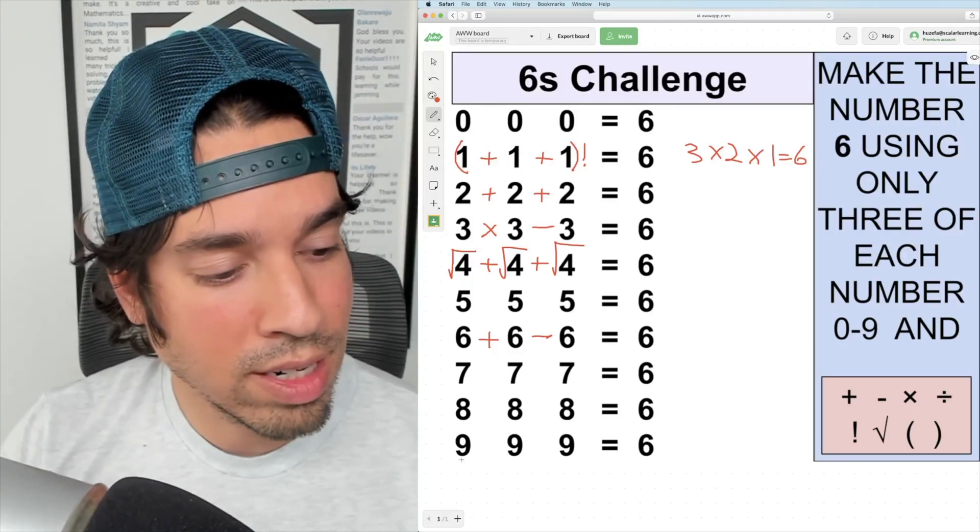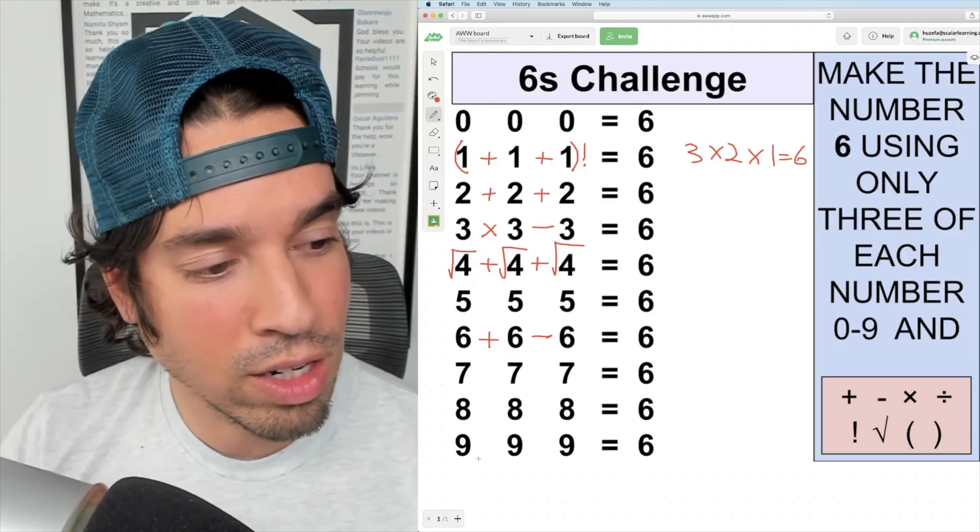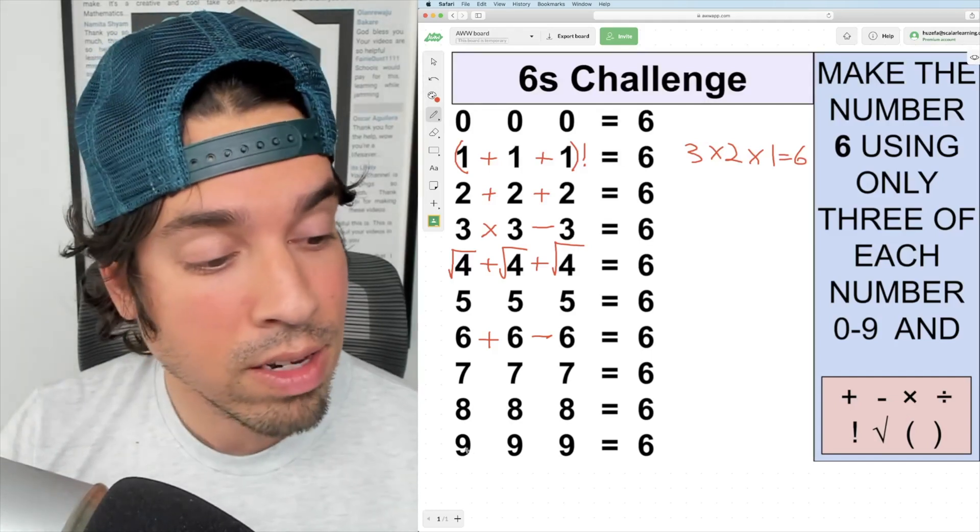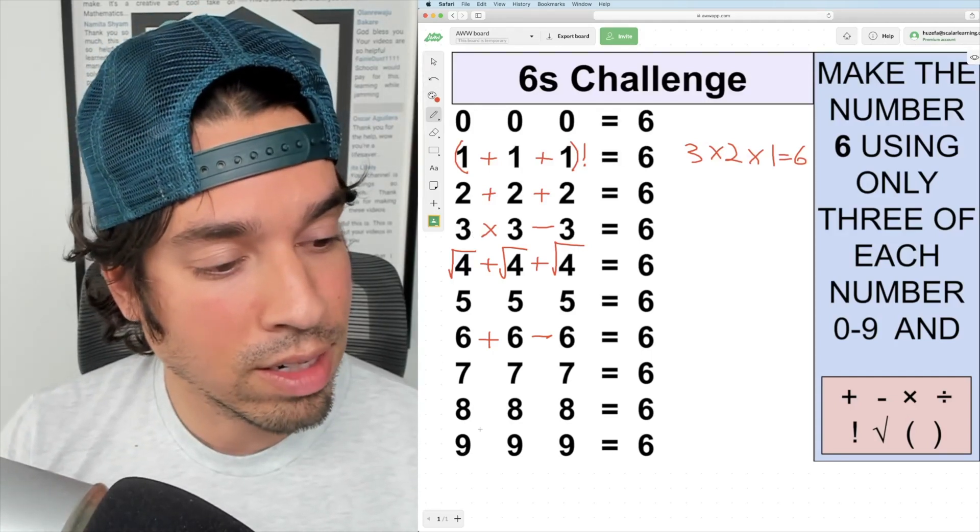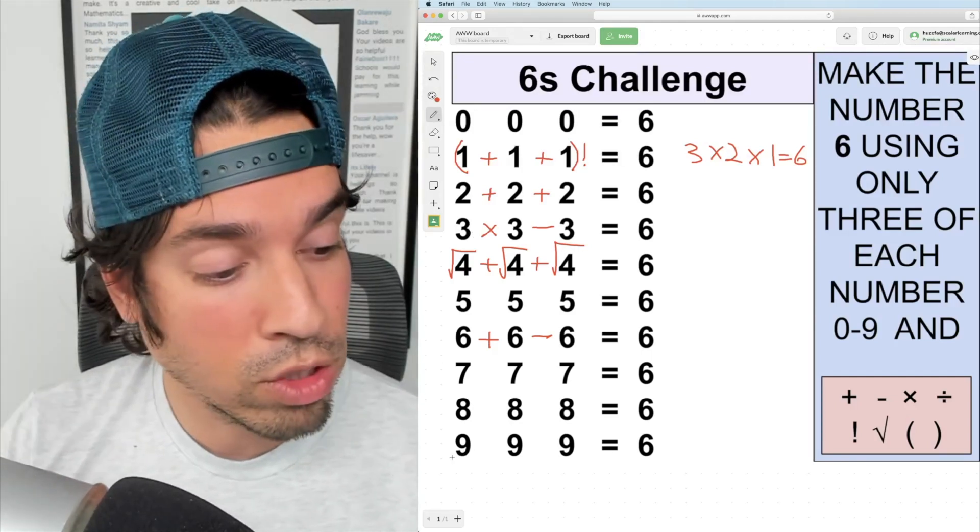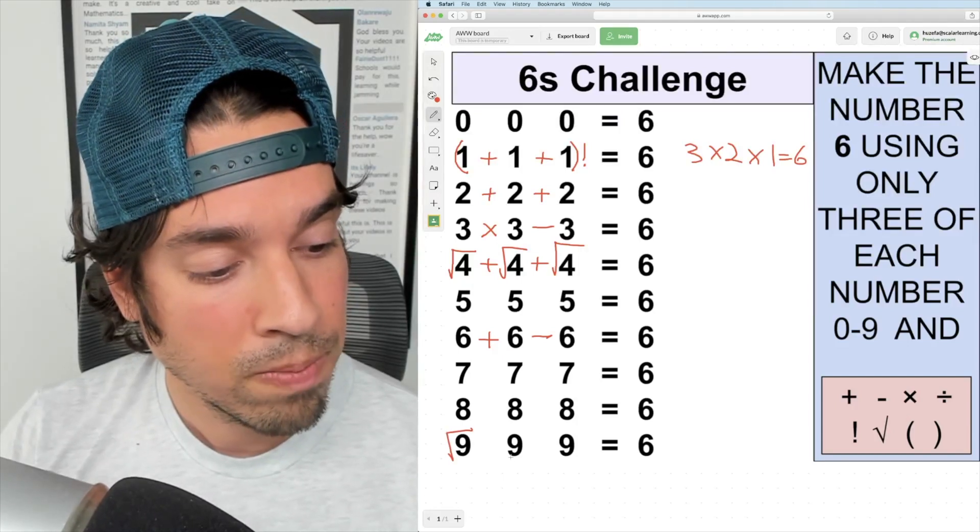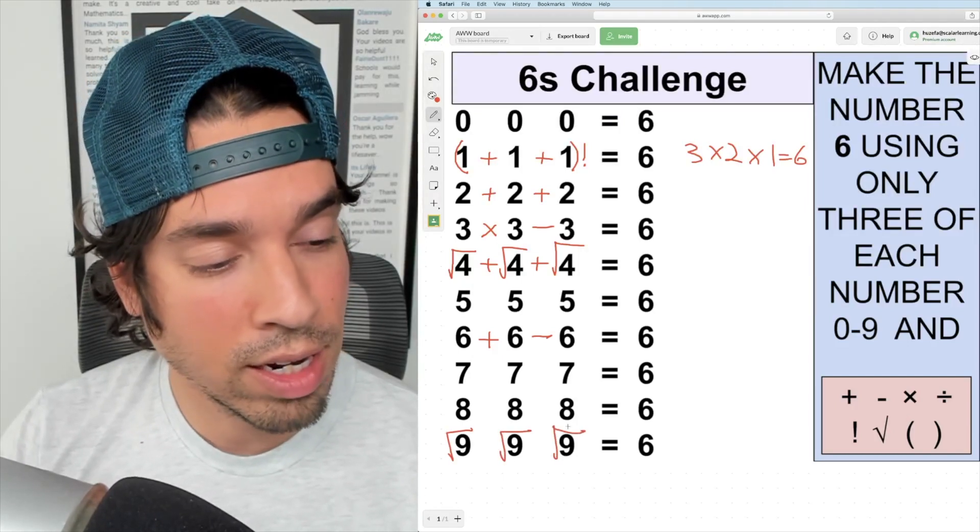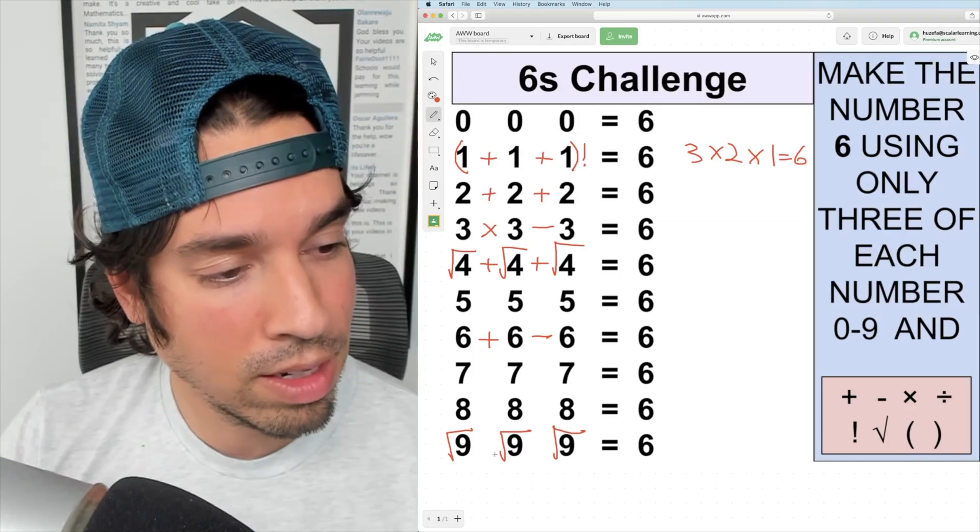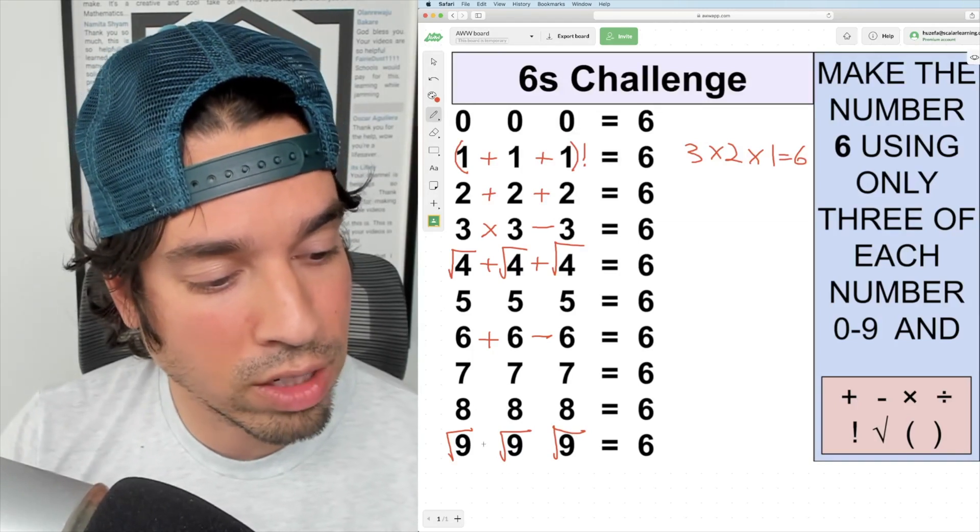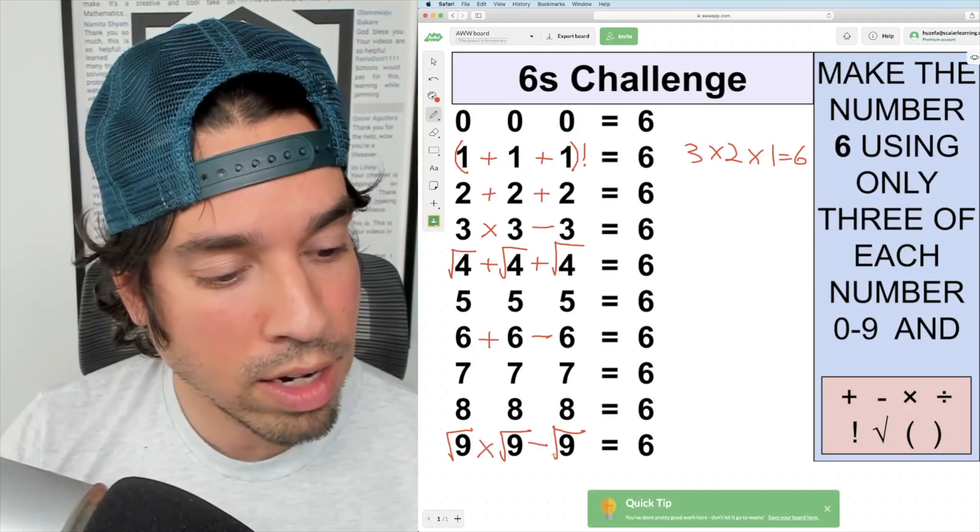Now let's move on to nine. We can do something interesting here as well, because nines are simply 3 squared. So if I take the square root of all these nines, now it's just like I got three threes. I can do the same thing I did up there: multiply, subtract, and done.